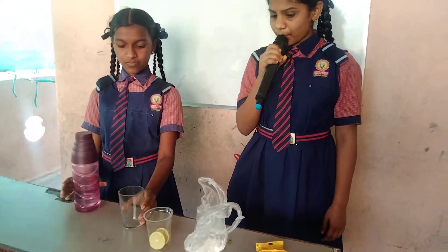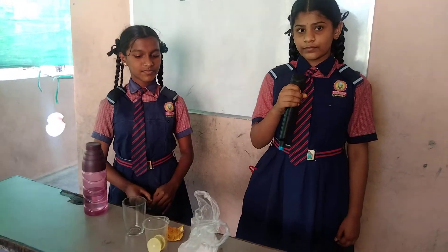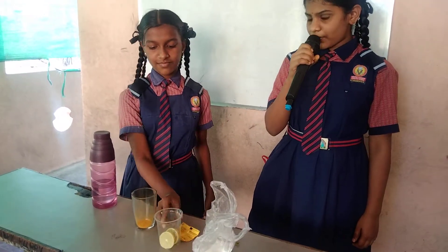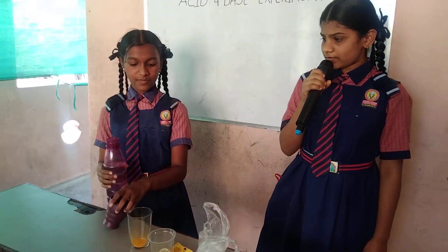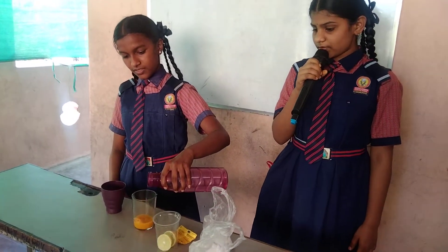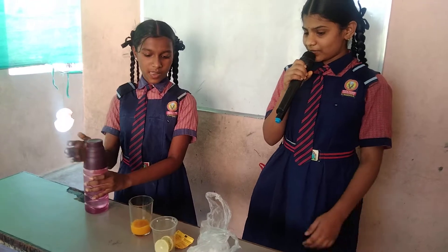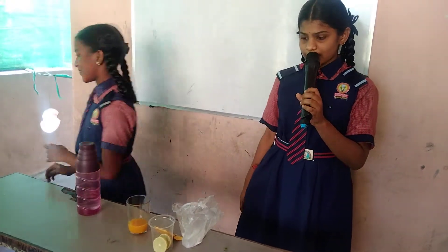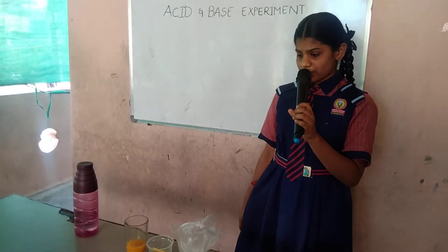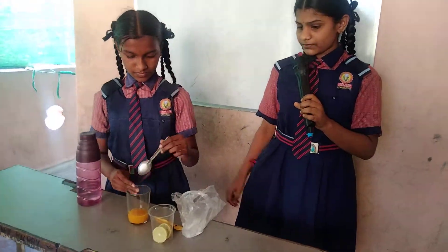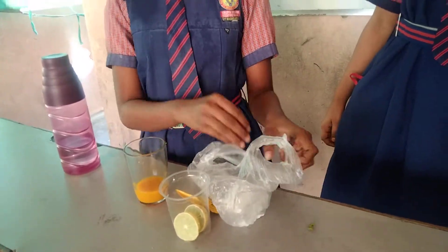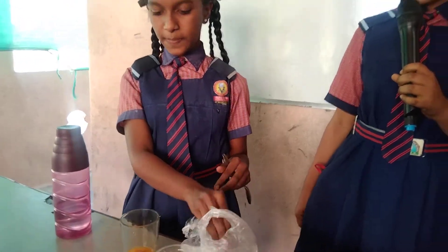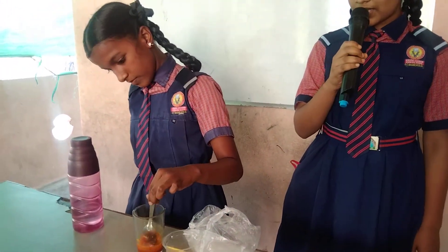First, we take a transparent glass and pour two tablespoons of turmeric, then pour some water into the turmeric. It is changing into a deep red color.